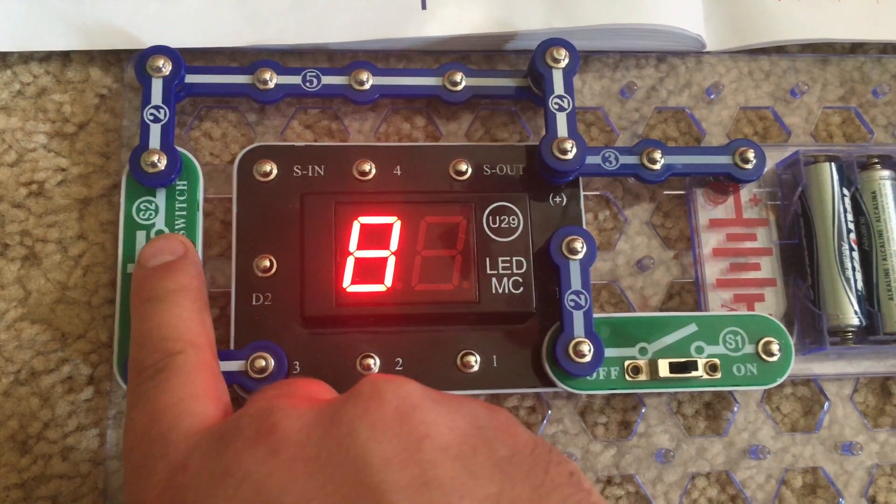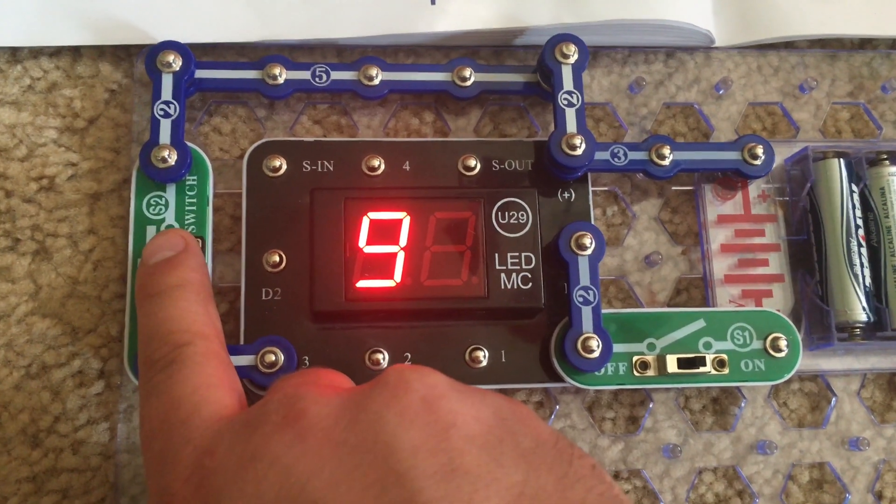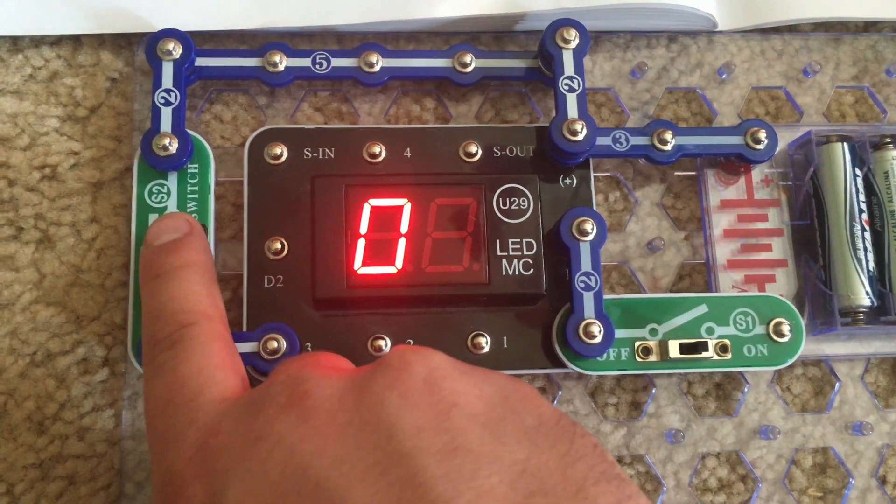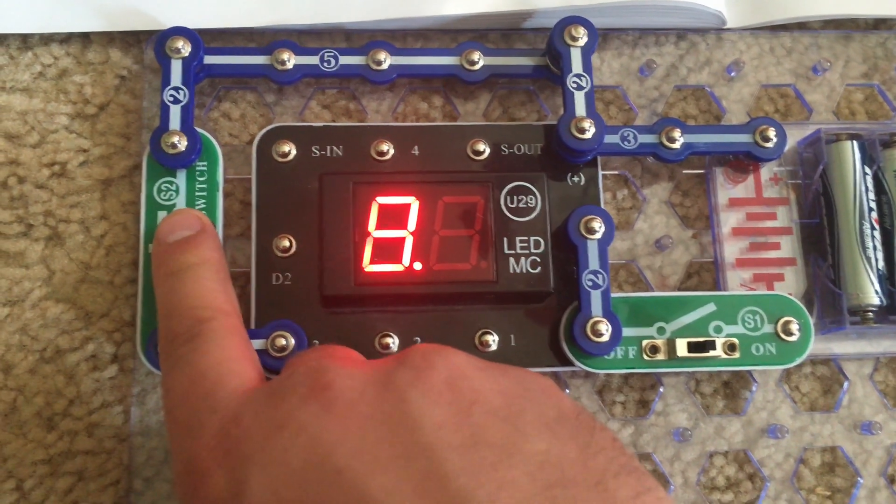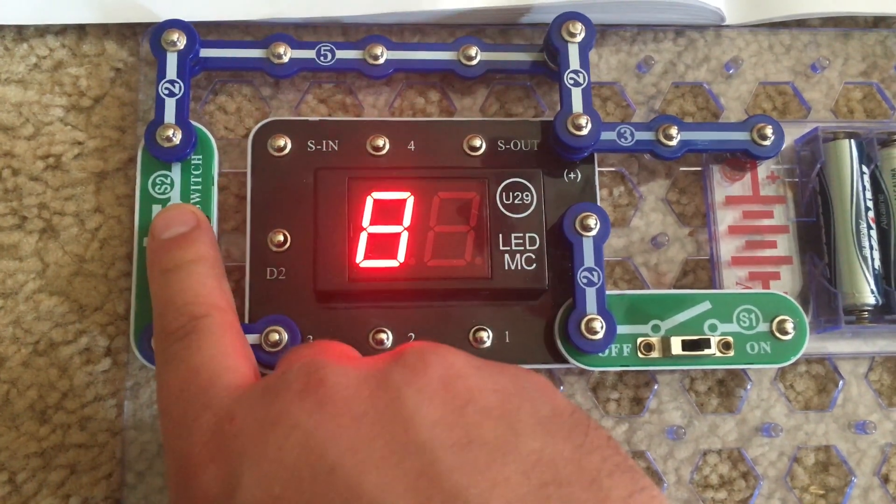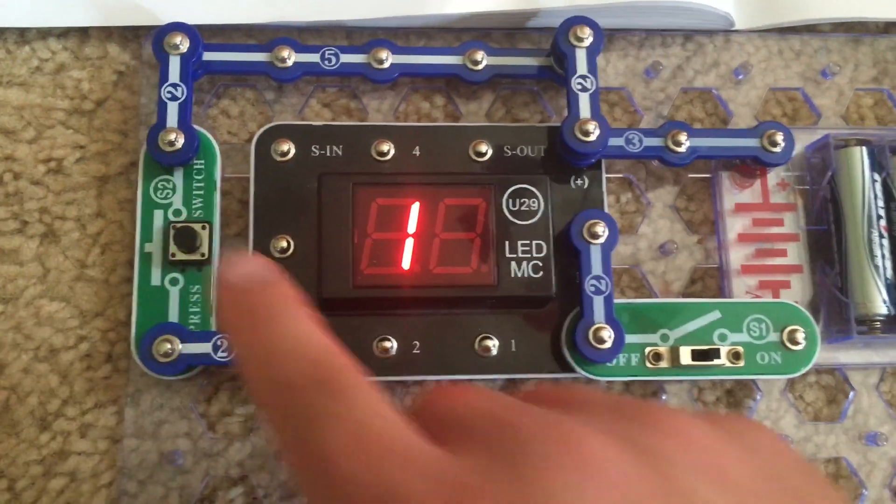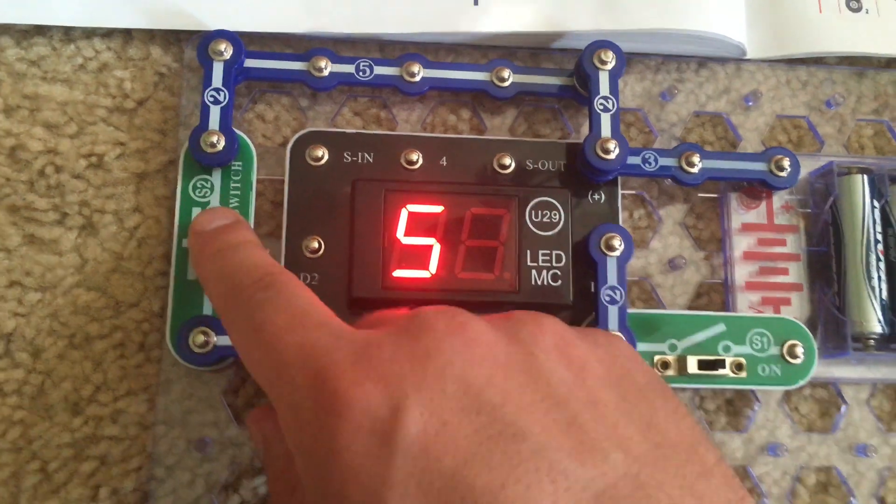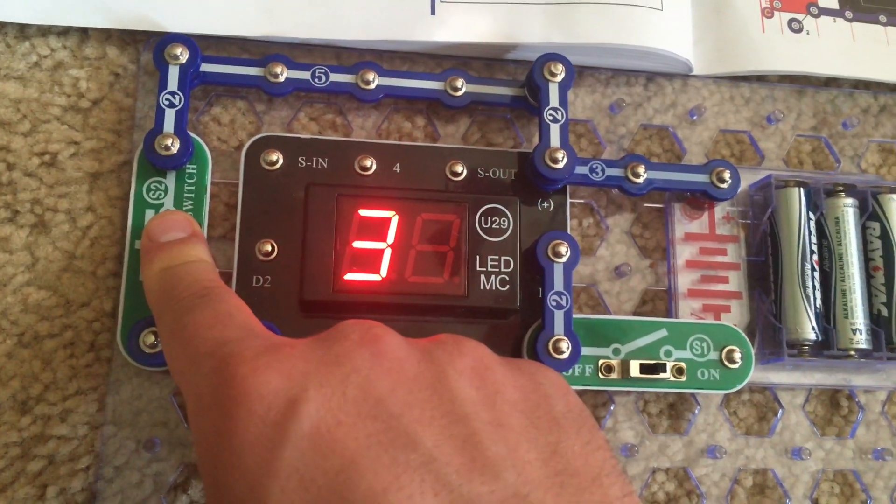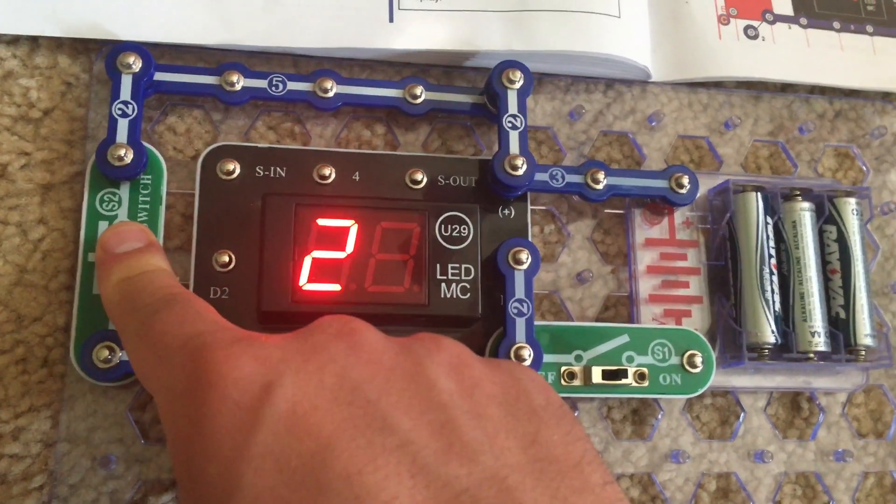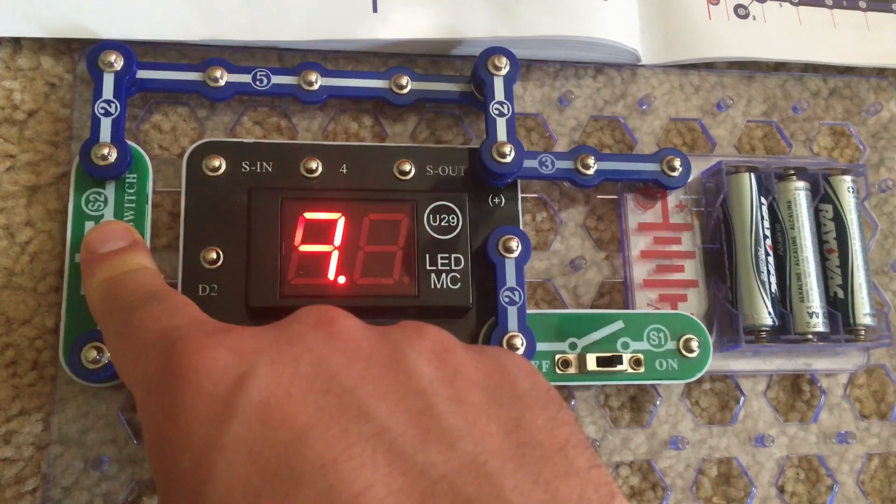And it will go up to the number nine before it resets to zero. If you hold down the press switch, the U29 display will cycle through the numbers quickly.